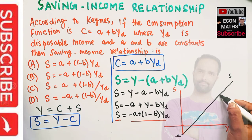The slope of this function is given by change in savings upon change in income.